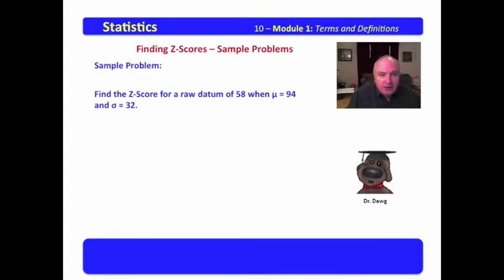We will start out with this problem. As always, in any problem, the first thing you do is read the problem. Then you identify what type of problem it is and then look for a means or a formula which might help you solve it. We read this and we see it says find the Z-score for a raw datum of 58 when mu equals 94 and sigma equals 32. Obviously, this is a Z-score problem. We would know that because we're in the section finding Z-scores. This is also a population since we have mu and sigma.